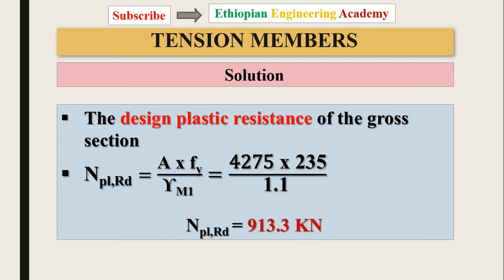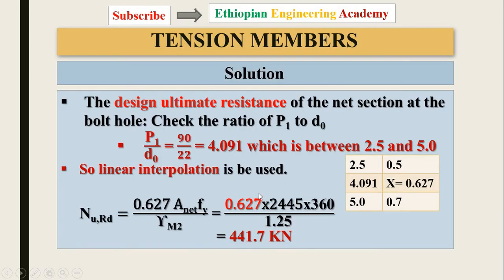The design plastic resistance is calculated using the same formula as in the previous examples — taking the gross area, multiplying by the yield strength, and dividing by the partial safety factor. The result gives the design plastic resistance of the gross section. We then move on to calculate the design ultimate resistance of the net section at the bolt hole.